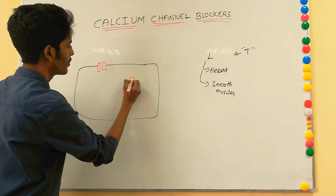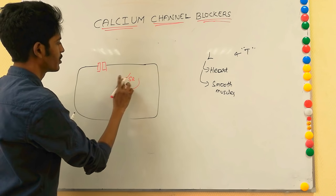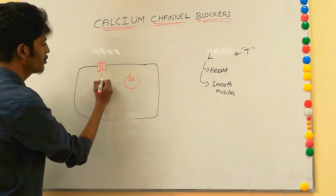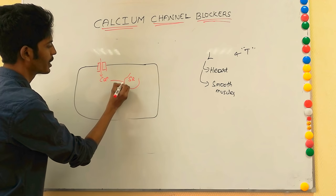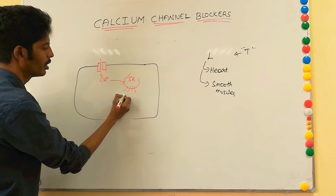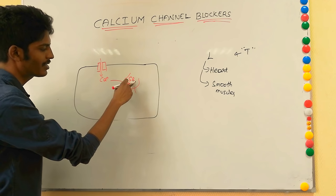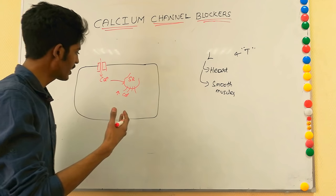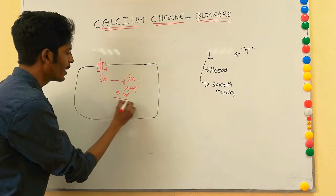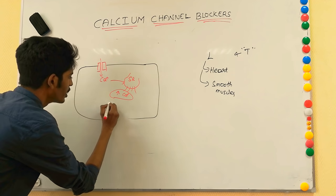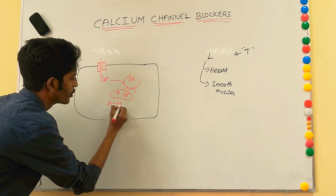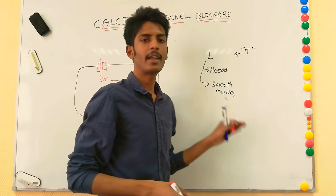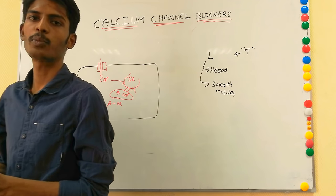The sarcoplasmic reticulum is a source of intracellular calcium. Whenever calcium enters the cell, it stimulates the sarcoplasmic reticulum to release stored calcium, increasing intracellular calcium. When intracellular calcium is increased, it forms bonds between actin and myosin, allowing the muscle to contract. Smooth muscles are found in blood vessels, intestines, and the uterus.